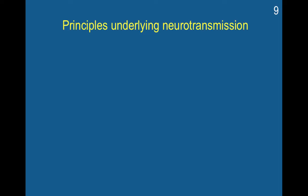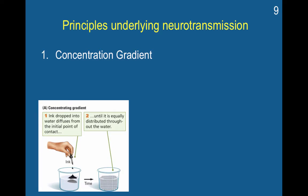There are a couple of basic principles underlying neurotransmission, and this is going to hark back to some of your high school biology. One is that you have a concentration gradient. A concentration gradient is a relatively straightforward idea, but it's really important. Something from a greater concentration will spread out until it is equally distributed.